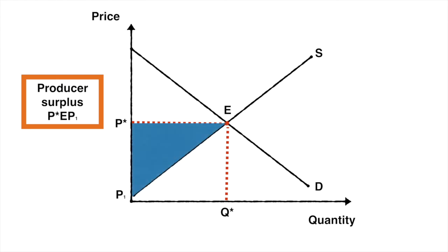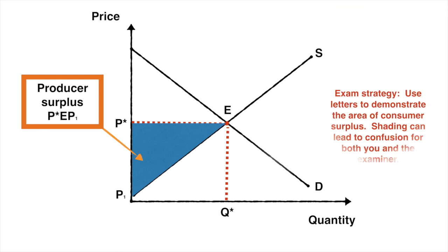I always encourage students to label the area of producer and consumer surplus by letters and not to use shading, because it's very easy for you or the examiner to get confused when you start shading all different areas. Letters are much clearer so I insist that you use this technique.